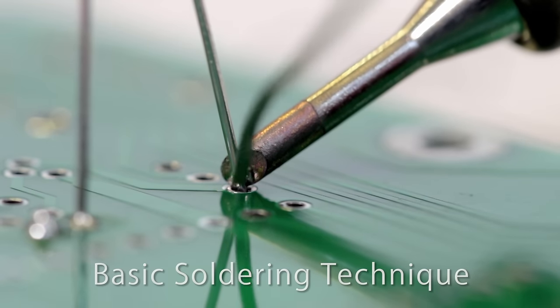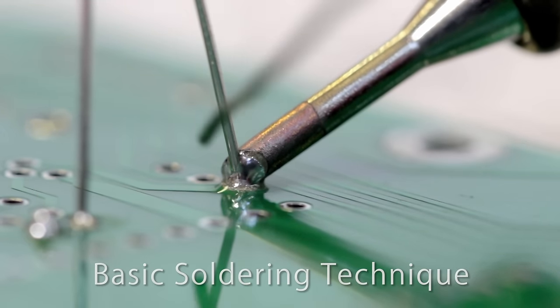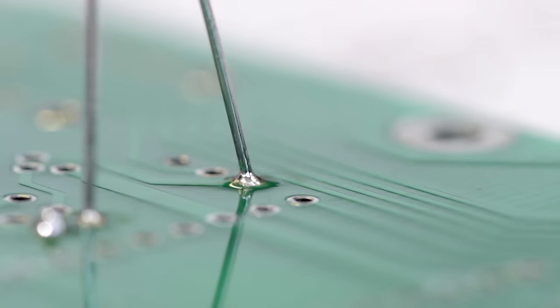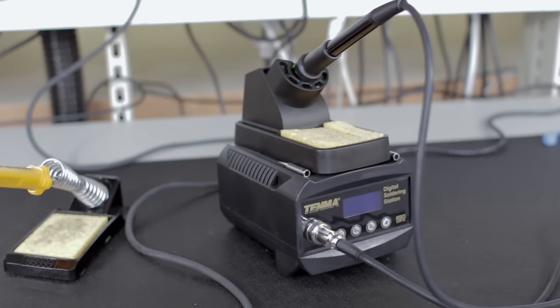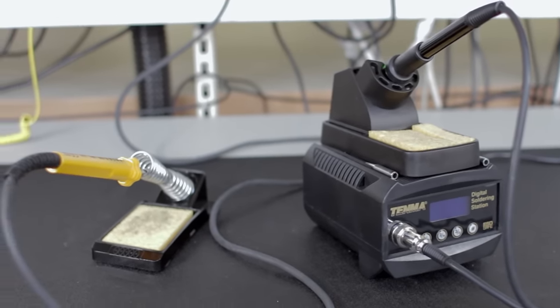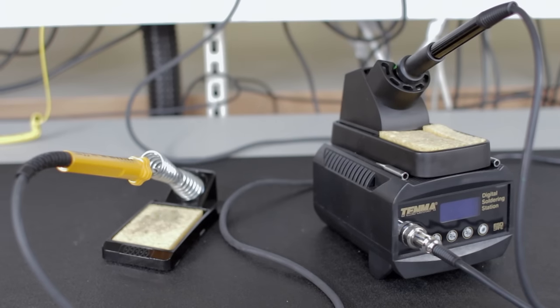This video shows basic soldering technique and the equipment used to solder. There are two main types of soldering iron. The iron to the right has a station which shows the temperature on the display. The controls adjust the desired target temperature. The one on the left works at a fixed temperature but is used in the same way.